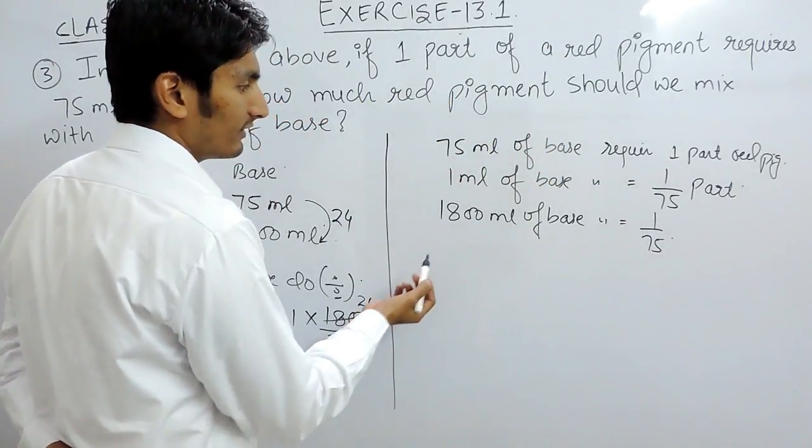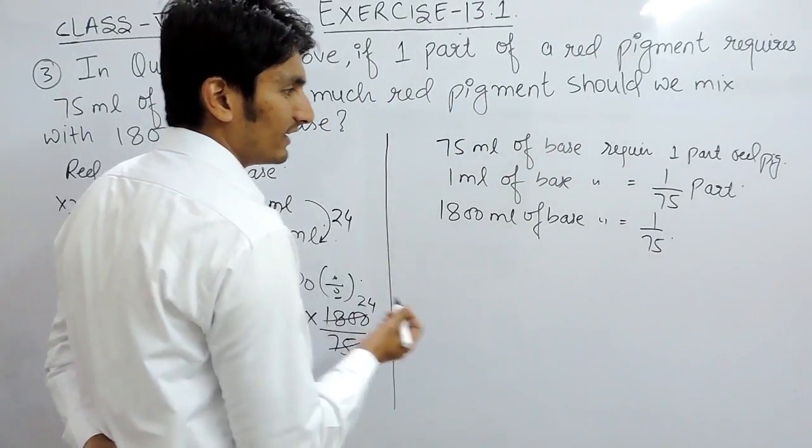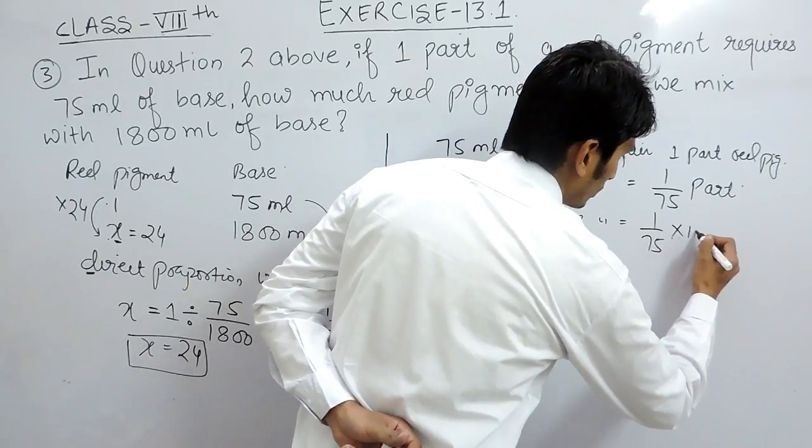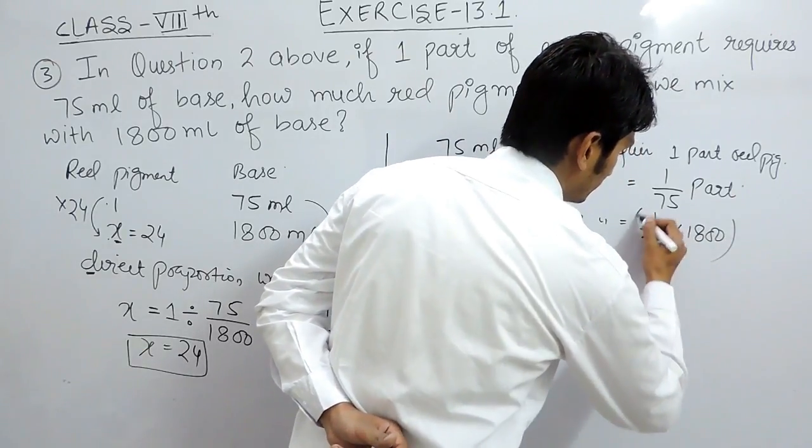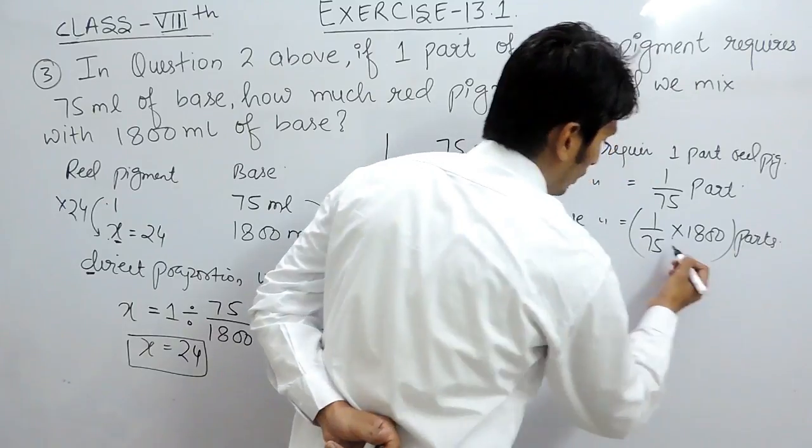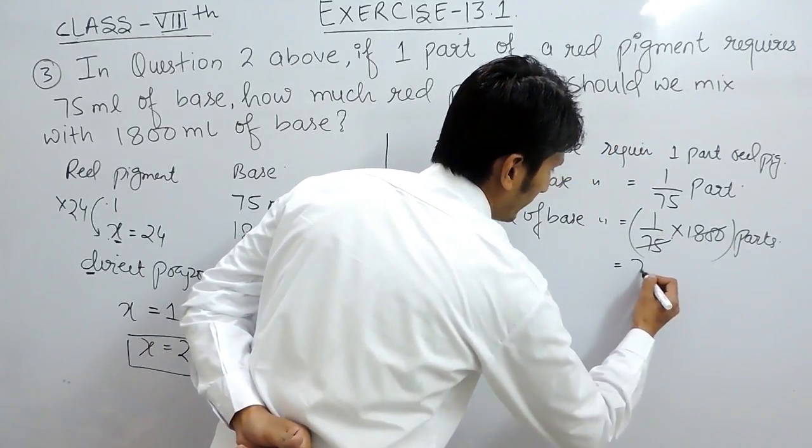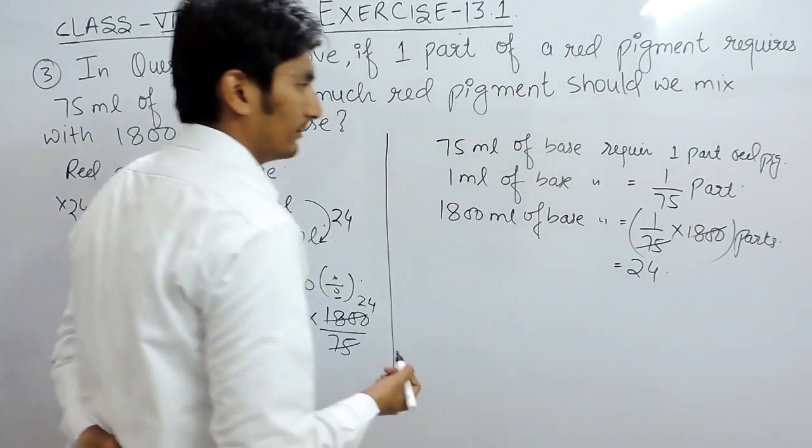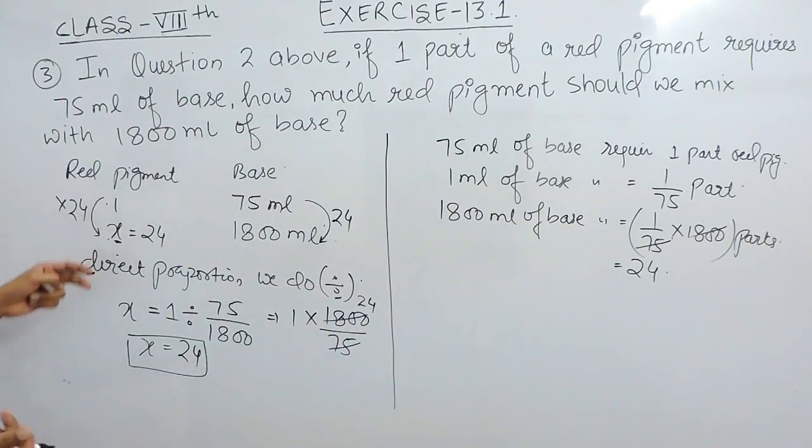Now you have to find that 1800ml of base will require one upon 75. In other words, you have multiplied this with 1800, so we have to multiply this also with 1800 parts. Now again, solving this, the same answer which is 24 will come.